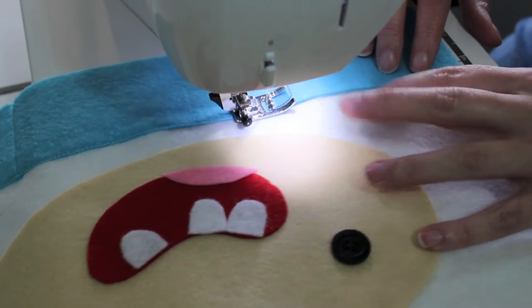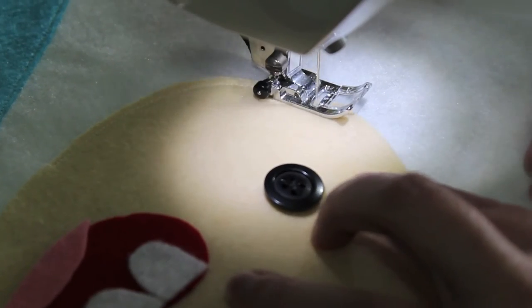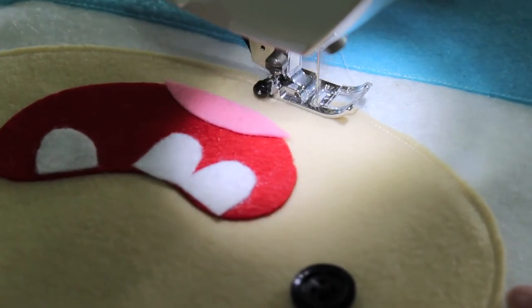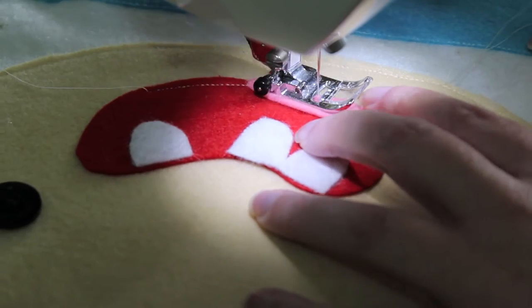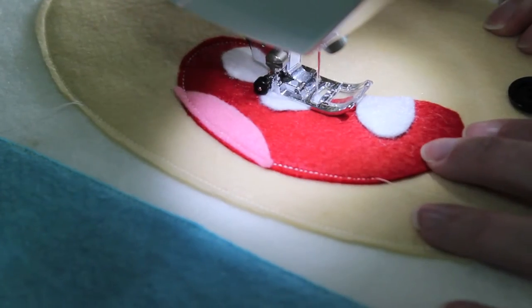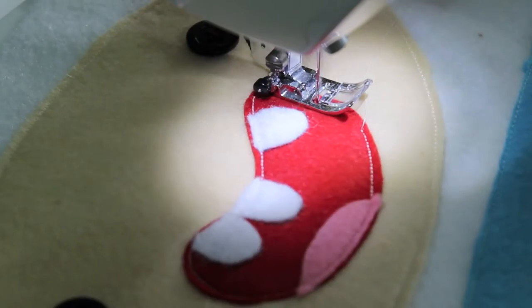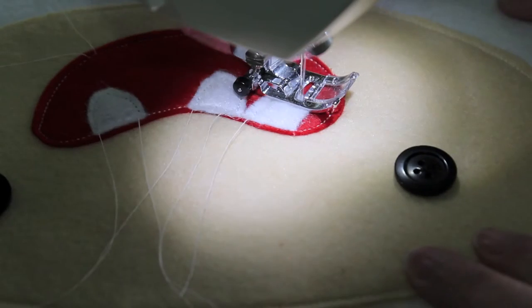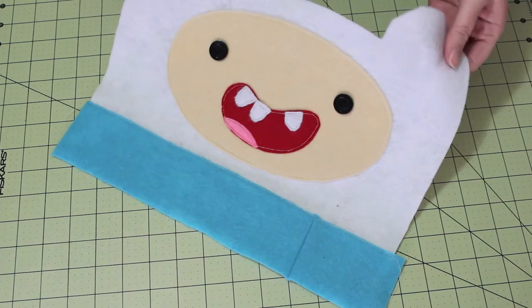Step 5 is optional. If you feel confident sewing on a sewing machine, then by all means, top stitch around each of the pieces on Finn's face. If you don't feel confident doing this, that's cool. Just leave them glued down and it will be fine. If you top stitch around these pieces, it just means that you'll have a nicer finish and it will last a bit longer.